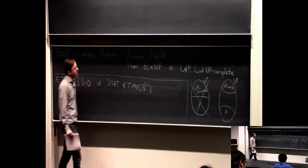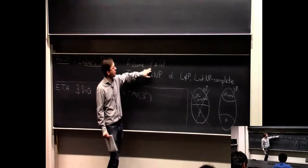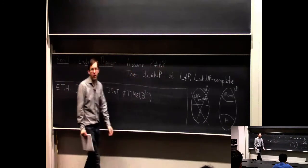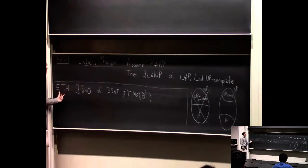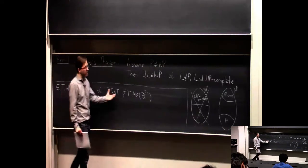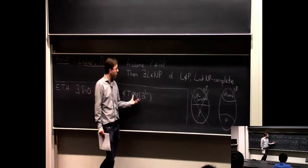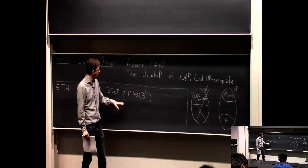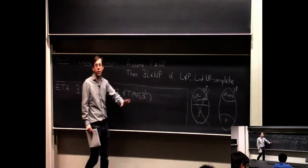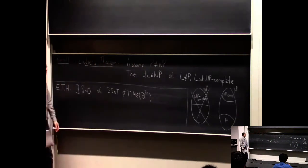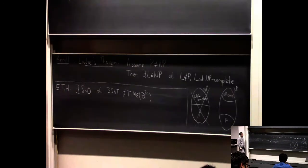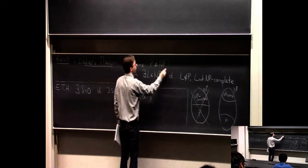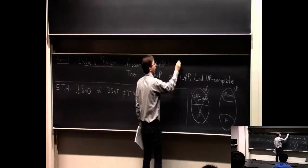Because of NP-completeness, we know that P does not equal NP is the same as saying 3SAT is not solvable in polynomial time. The exponential time hypothesis says that 3SAT is not even solvable in sub-exponential time — you can't do it in 2 to the root n time or 2 to the n to the 0.99 time. In fact, there's some delta like 0.001 such that you can't even do it in 2 to the 0.001n time. So it's definitely a stronger hypothesis, and we kind of believe it's true. I'm going to show you a proof of Ladner's theorem assuming ETH.